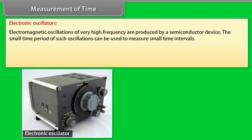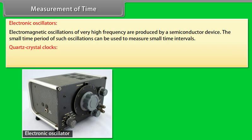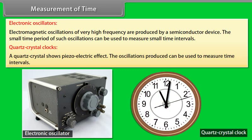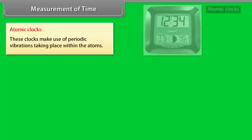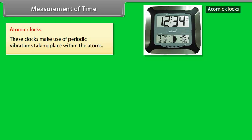Quartz crystal clocks: A quartz crystal shows piezoelectric effect. The oscillations produced can be used to measure time intervals. Atomic clocks: These clocks make use of periodic vibrations taking place within the atoms.